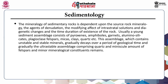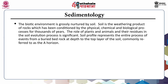Usually a young sediment assemblage consists of mineral groups: pyroxenes, amphiboles, garnets, aluminosilicates, plagioclase feldspars, mica, clays, quartz, etc. This assemblage, which contains unstable and stable minerals, gradually decays over a period of geological time, and gradually the ultra-stable assemblage comprising quartz and miniscule amounts of feldspars and minor mineralogical constituents remains.